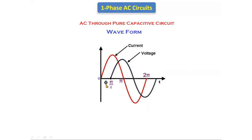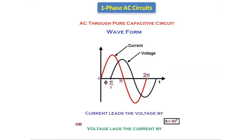We can say that the phase angle between voltage and current is phi equal to 90 degrees. Current leads the voltage by 90 degrees, or we can say that voltage lags the current by 90 degrees in the pure capacitive circuit.